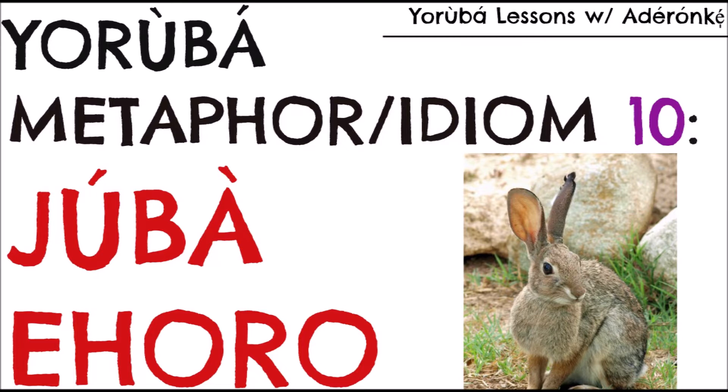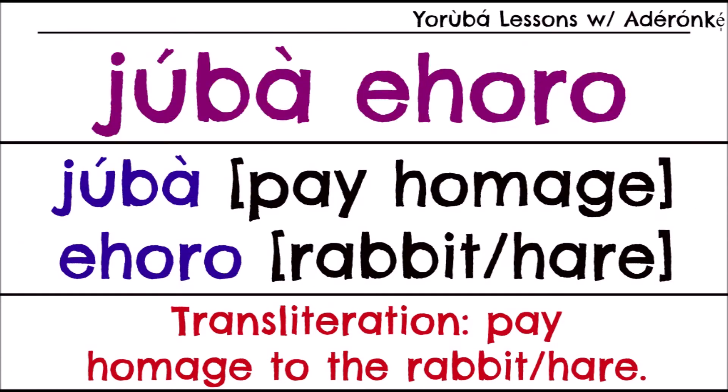Júbà Ehoro — what does that mean? I'm going to give word-for-word transliterations. 'Juba' means to pay homage. When you stretch 'juba' out to find the origin, you notice it's a combination of two words: 'ju' and 'iba.' 'Iba' is homage; 'ju' is equivalent to to pay, to give, to offer. So 'ju' plus 'iba' gives you 'juba,' meaning pay homage.